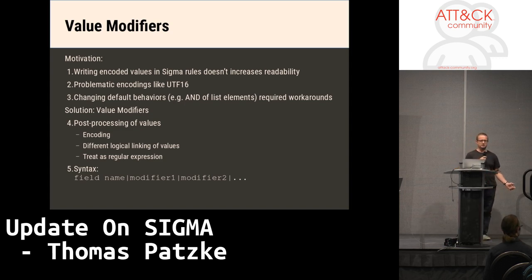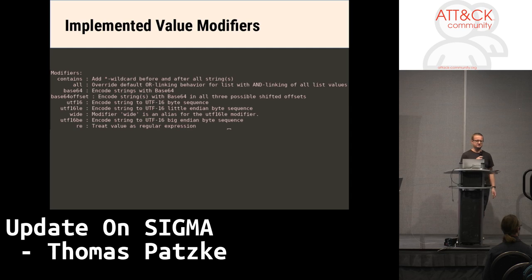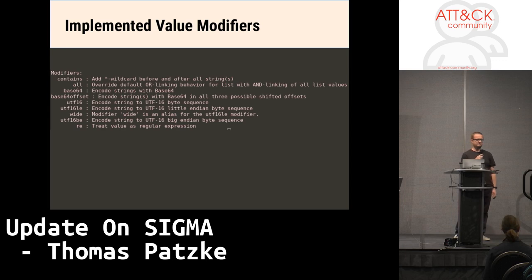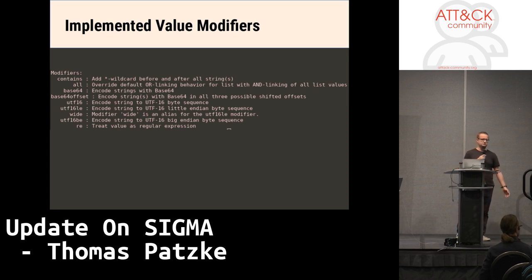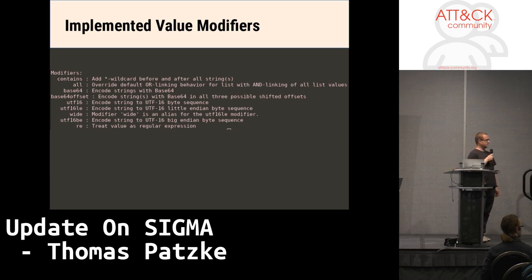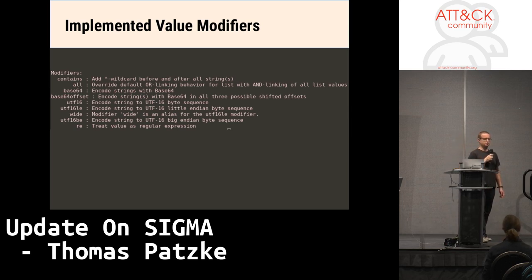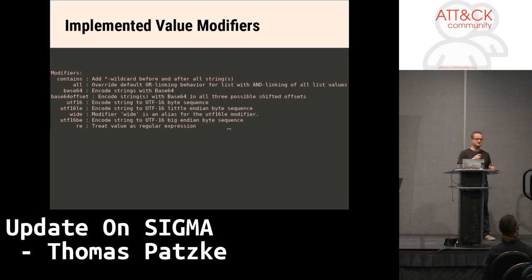The syntax is quite simple: after the field name in the Sigma rule you can add the modifiers separated by a pipe, and you can also chain modifiers. What we have currently: one is the 'contains' modifier. Normally a list is OR-linked, which is usually what you want in detection of log events. With the 'all' modifier you can change this to AND-linking, so you can list the values that should all be contained in one log event field.